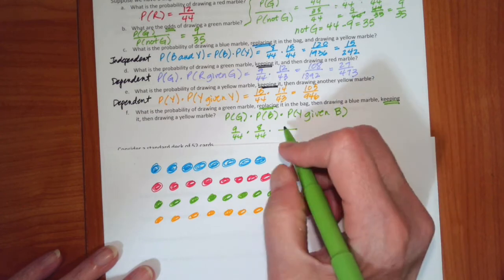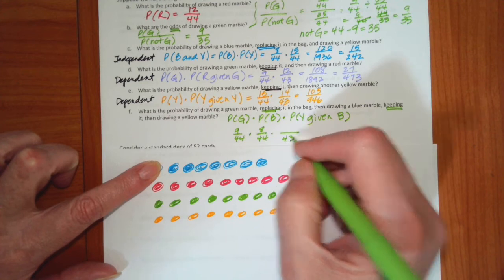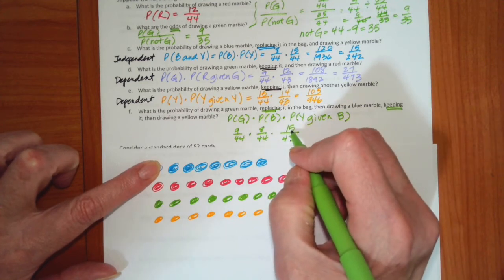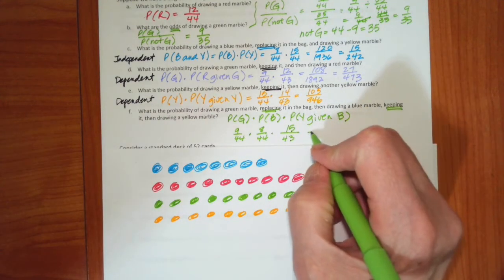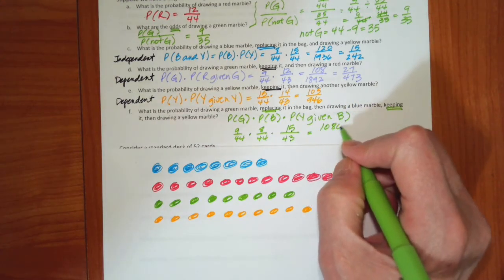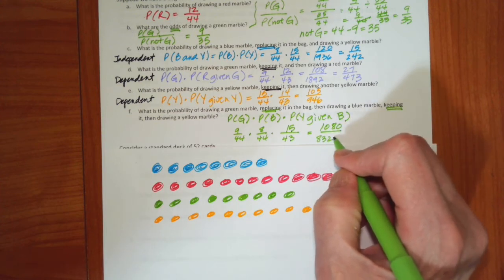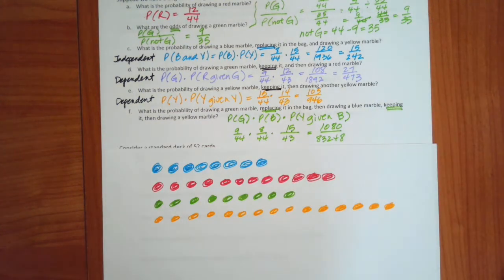We've kept a blue now, so one of the blues is gone. We only have 43 marbles left, and 15 are yellow. So that gives us 1080 divided by 83248. And that can be reduced, but again, it doesn't matter one way or another.